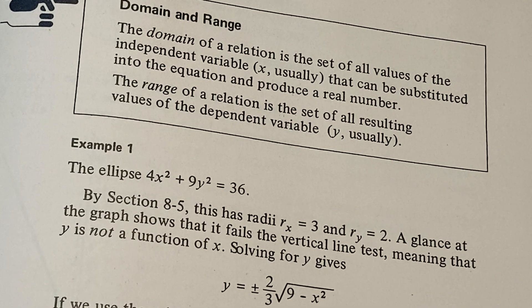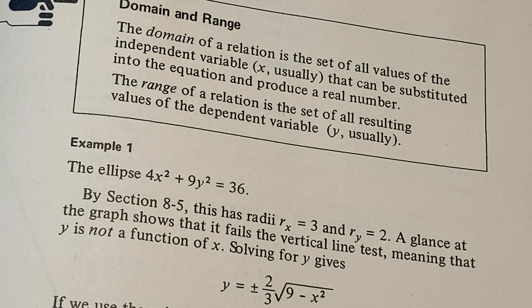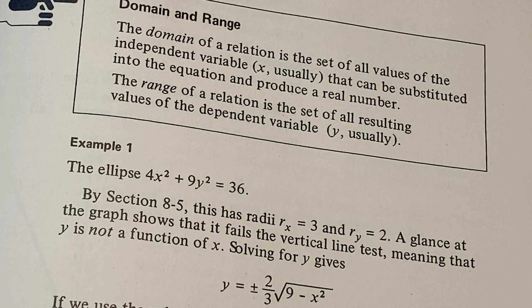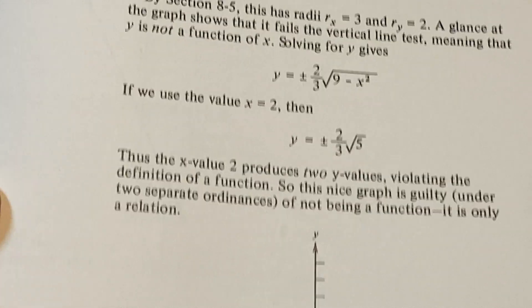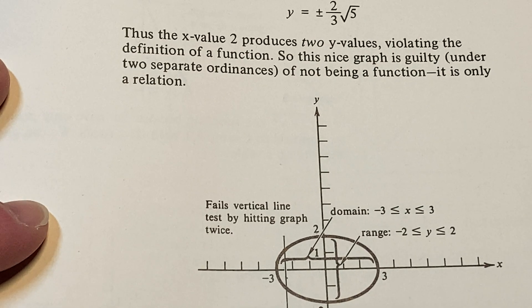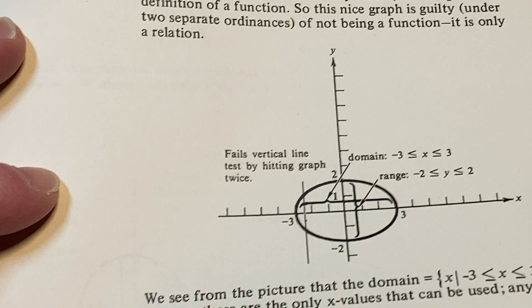It says the domain of a relation is the set of all values of the independent variable X, usually, that can be substituted into the equation and produce a real number. The range of a relation is the set of all resulting values of the dependent variable Y, usually. Okay. So we have an ellipse. Cool. So I guess they graph the ellipse and they find the domain and range. Yeah.